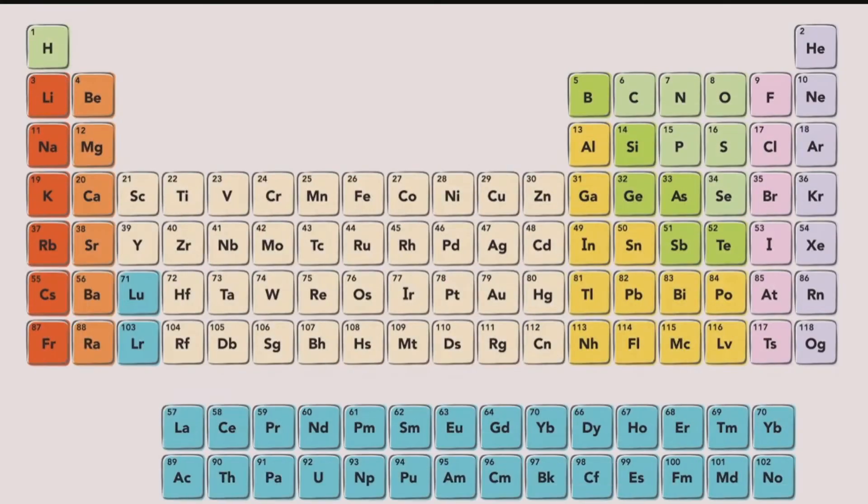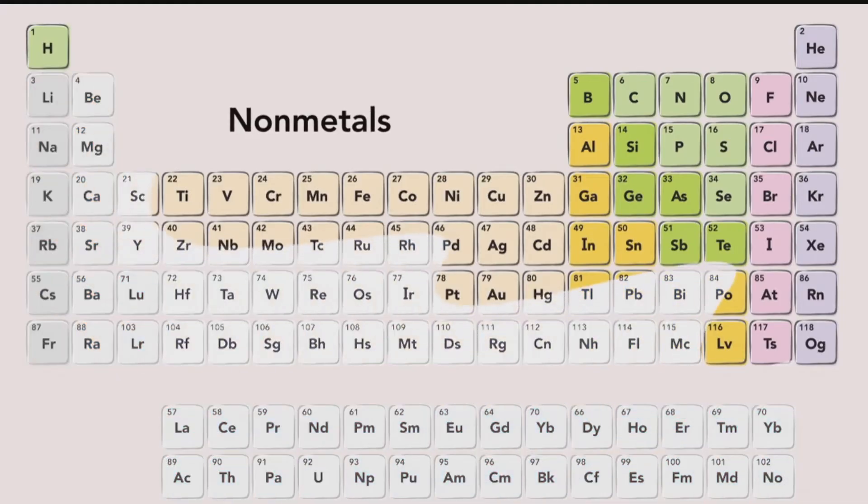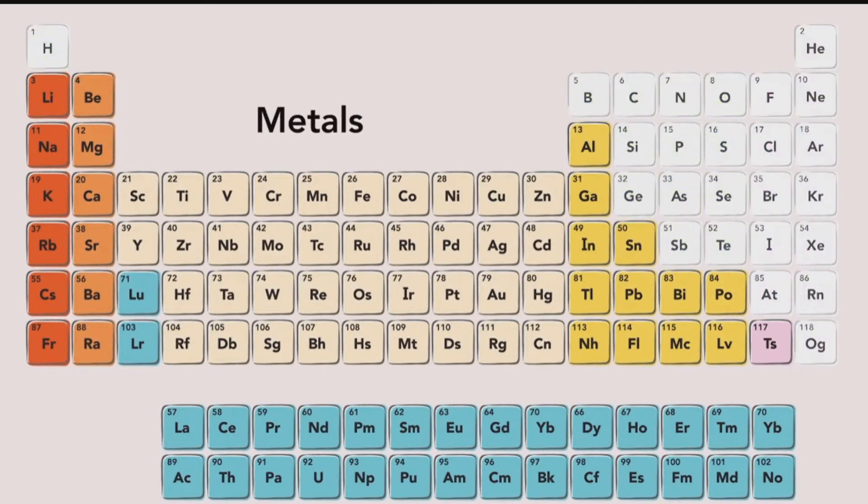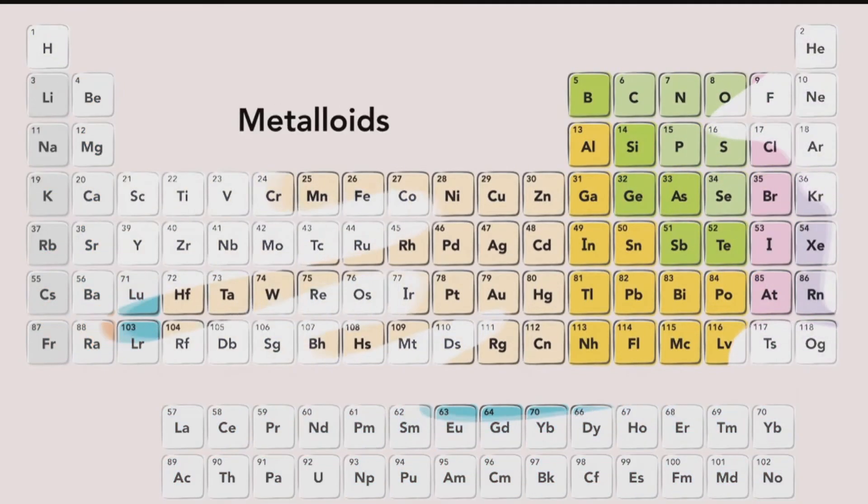The periodic table also indicates the metallic character of elements. These elements are non-metals, these are metals, and these are metalloids.